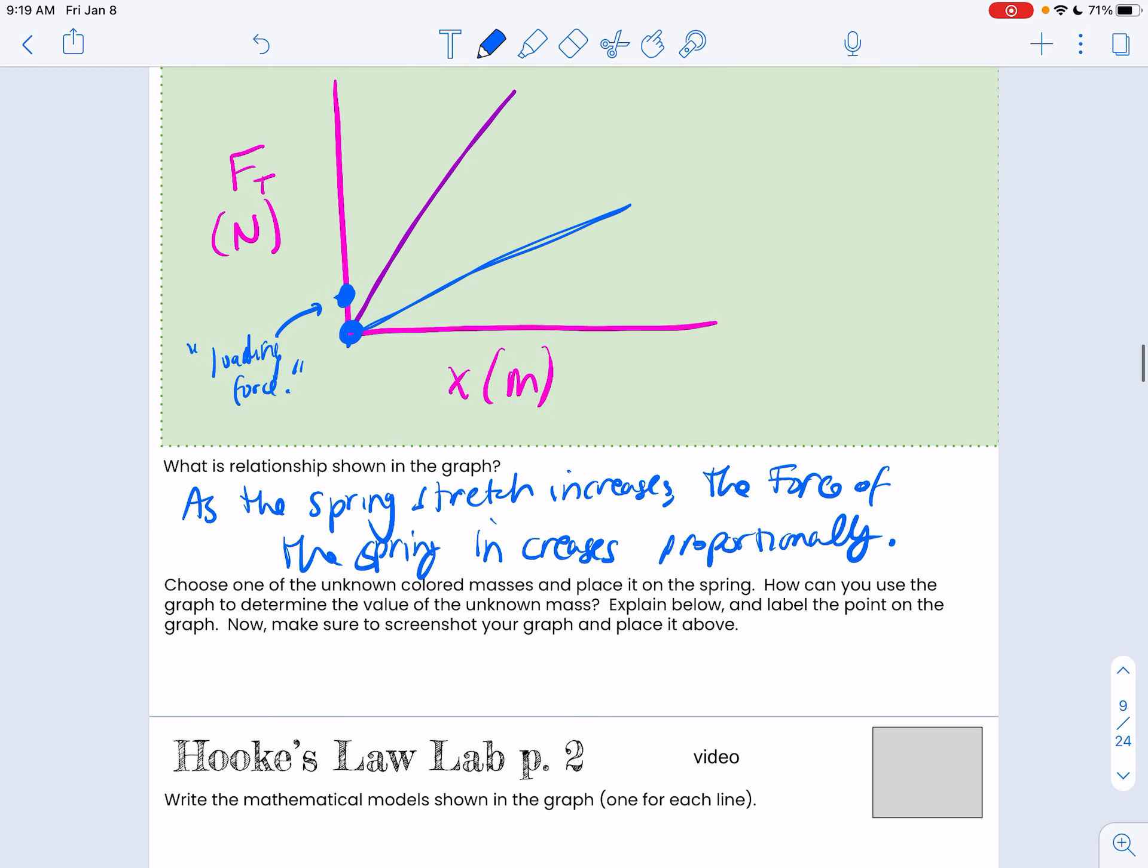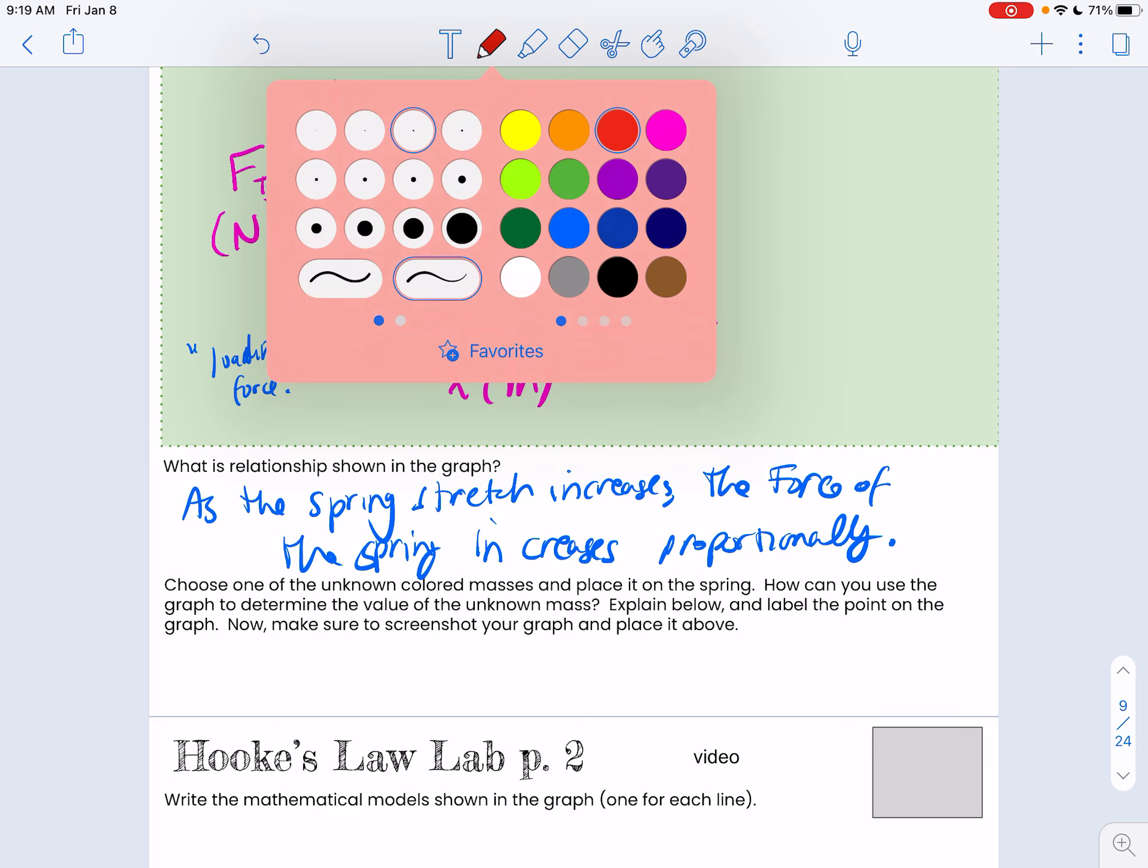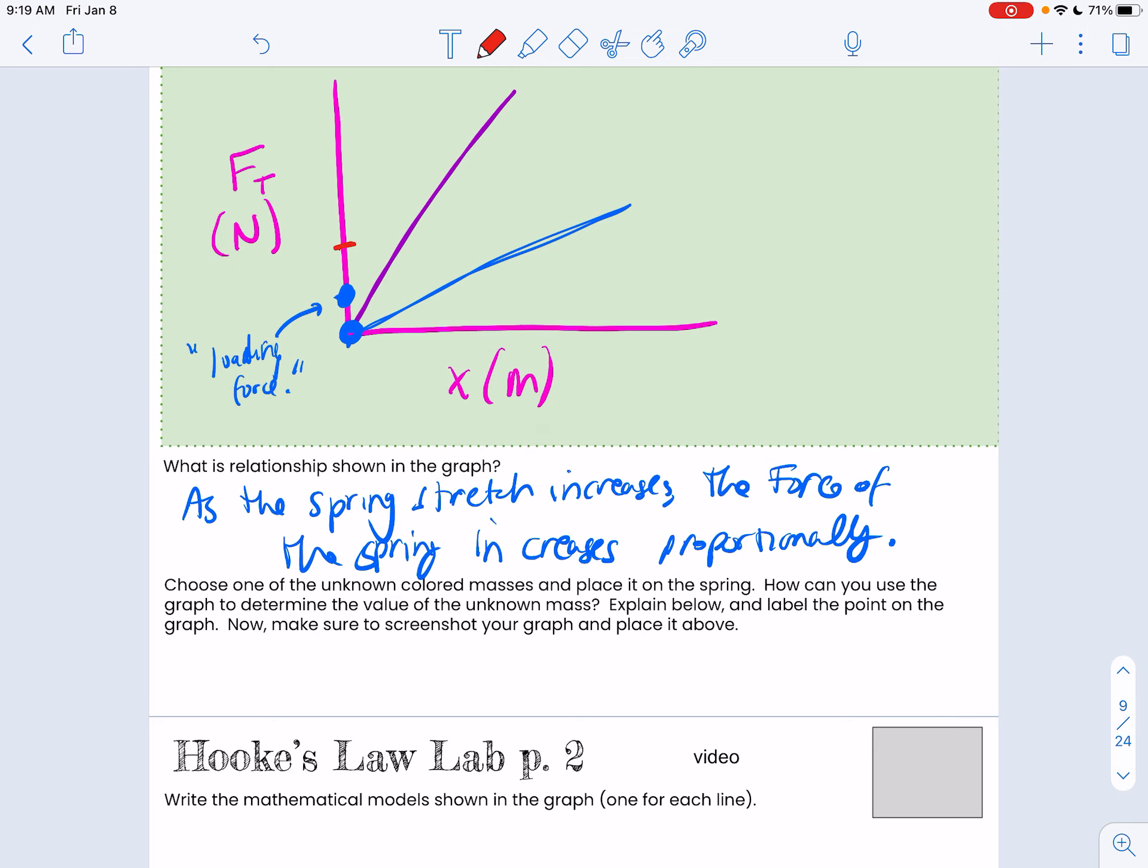If you chose an unknown mass, you should have been able to pick some unknown mass, and if you follow it across and put it here, even if you didn't measure it, you would know how far it would stretch. Once you have this line, you could know how far any mass would end up stretching the spring.